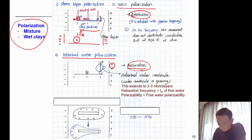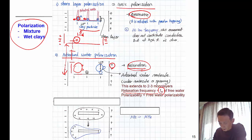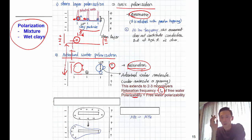The water molecule is spinning, and this extends to two to three monolayers from the clay surface. This absorbed water molecule polarization occurs. The relaxation frequency of this absorbed water polarizability is the same as free water, but the polarizability is much less than free water. The water molecule mass is the same whether absorbed or free, so the relaxation time — the time taken to align — is the same. However, how much the molecule can rotate is different; it is much less than free water.